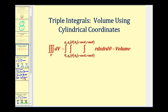To determine the volume of a solid using cylindrical coordinates, we're going to have a triple integral over the region V integrated with respect to V, where differential V is equal to r dz dr d theta. Remember we have an extra factor of r, and the limits of integration will be expressed using r and theta. This is very similar to what we did in the previous video when we introduced triple integrals using cylindrical coordinates.